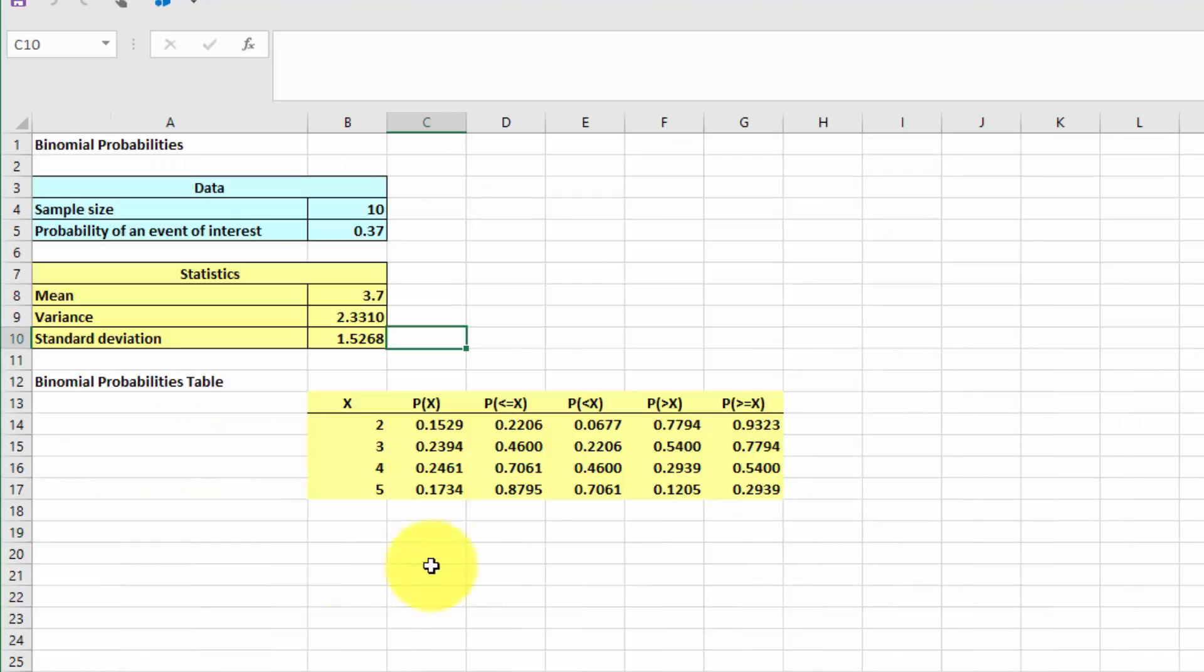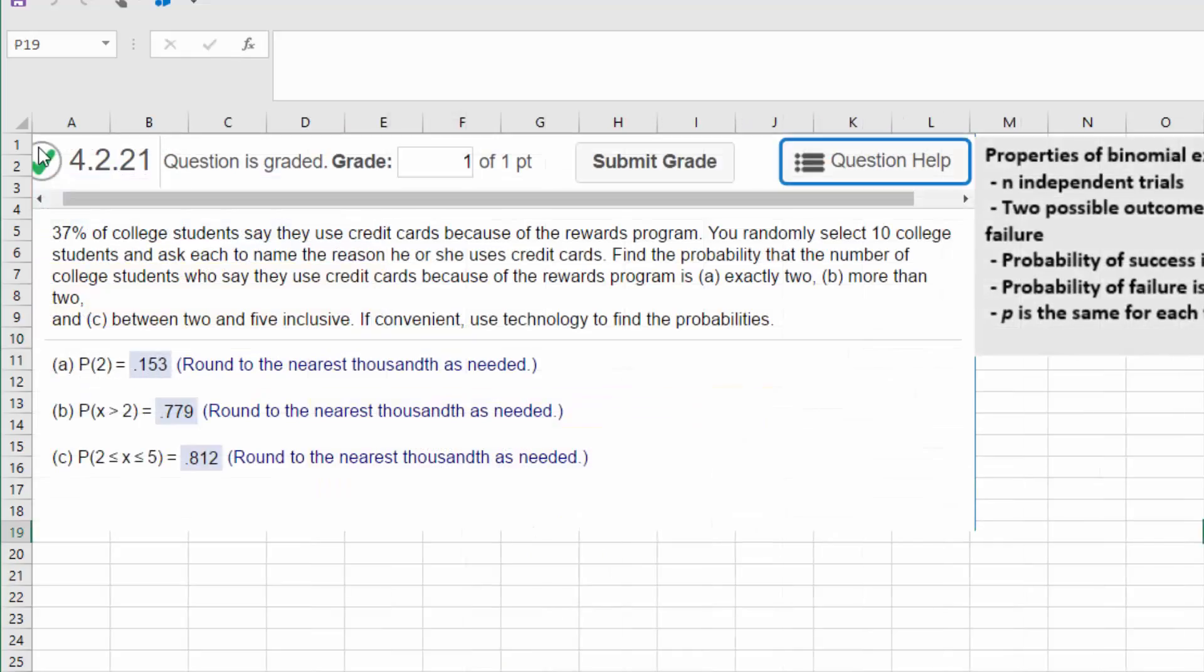The next is the probability of greater than 2. So let's go back to our table and we look over here. Our value of 2 for x, probability of greater than 2, right there, 0.7794, 0.779. So I'll go back here and see. Yes, that's the answer they wanted.